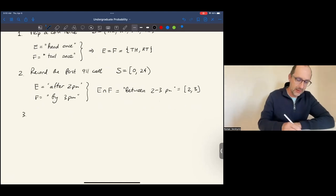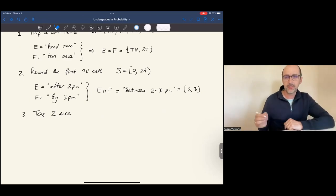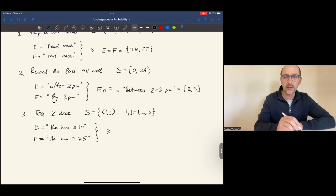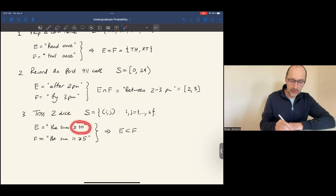Example 3. Let's toss two dice. The cubes with dots on them, the number of dots is between 1 and 6. An outcome is just a pair of the numbers. So the sample space, all possible outcomes are all possible pairs of numbers, each of which is between 1 and 6. Let's look at these two events. E is that the sum of the two dice is at least 10. And F, the sum of the two dice is at least 5. In this case, one of these events implies the other. Which one? E implies F. Because if the sum is at least 10, it's automatically at least 5.